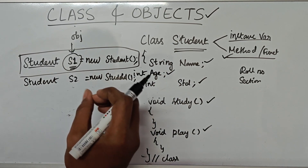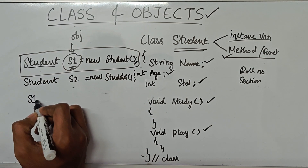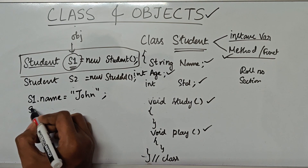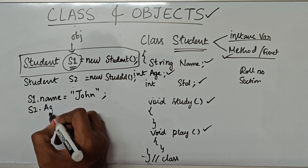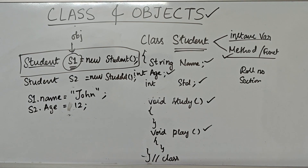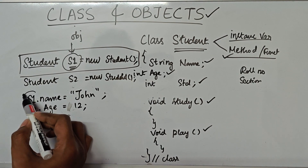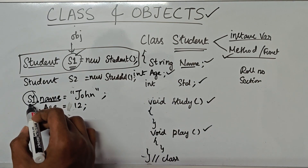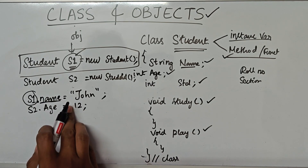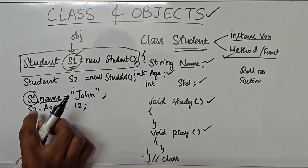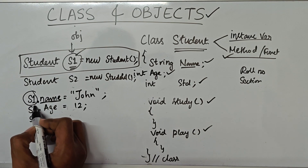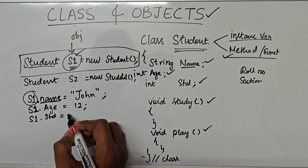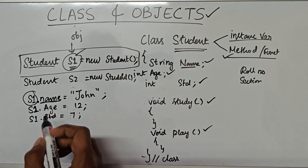Now let's say I want to add a name for student one. I'll say: s1.name = "John". I can also say: s2.age = 12. You see how we are going to use the dot operator. This is the object we created, and we put a dot operator then mention the instance variable we want to use. So s1.name = "John", s2.age = 12. And s1.std can be set to 7, if he is in the seventh standard.